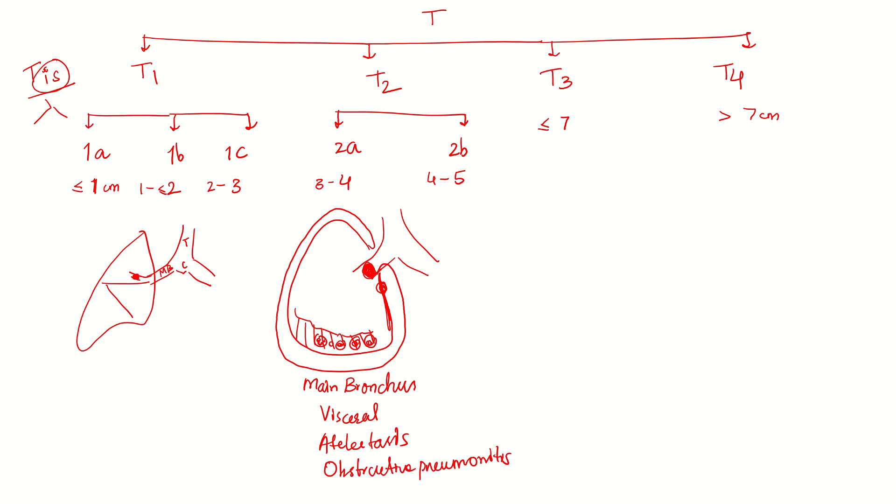Coming to T3, there is involvement of parietal pleura, parietal pericardium, phrenic nerve, Pancoast tumor, and the presence of tumor within the same lobe as the primary. Supposing this is the primary, there is another separate tumor nodule within the same lobe of the lung.